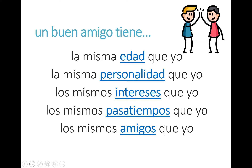Now we know that mismo/misma etc. is the word for 'same' and que yo means 'as me' or 'as I.' What do you think about the words in the centre? Edad, personalidad, intereses, pasatiempos, amigos. Hit pause if you want to take a moment to review those words and tell me what you think they mean. La misma edad que yo — the same age as me. La misma personalidad — same personality as me. Los mismos intereses que yo — same interests as me. Los mismos pasatiempos que yo — the same pastimes as me. And los mismos amigos que yo — the same friends as me. Take a moment to add the English to your handout. Un buen amigo tiene — a good friend has.